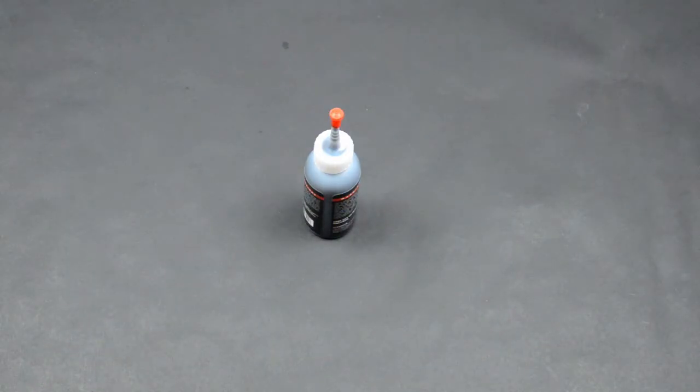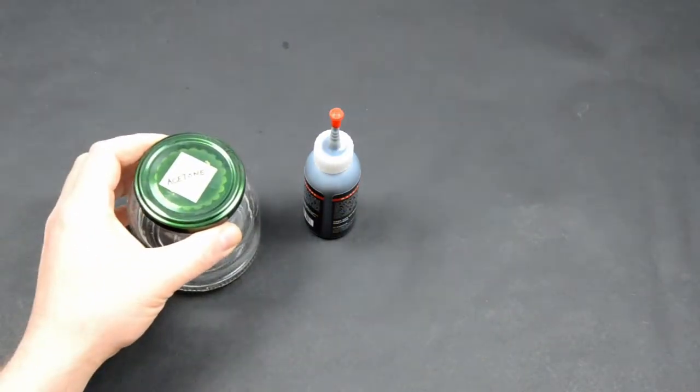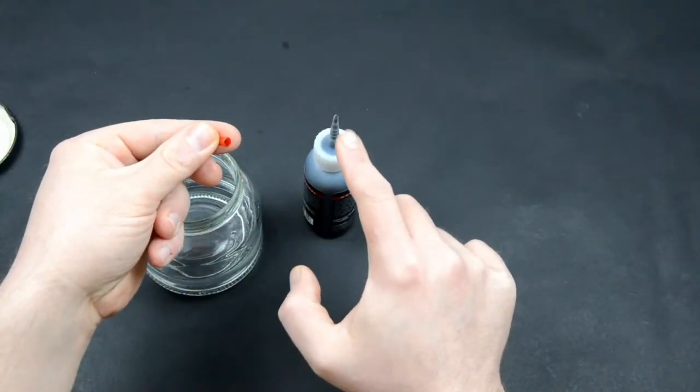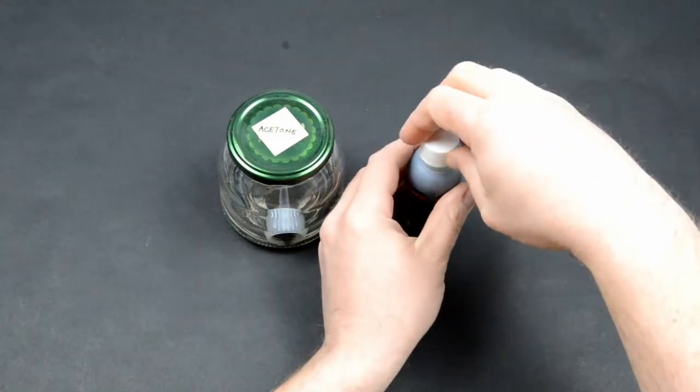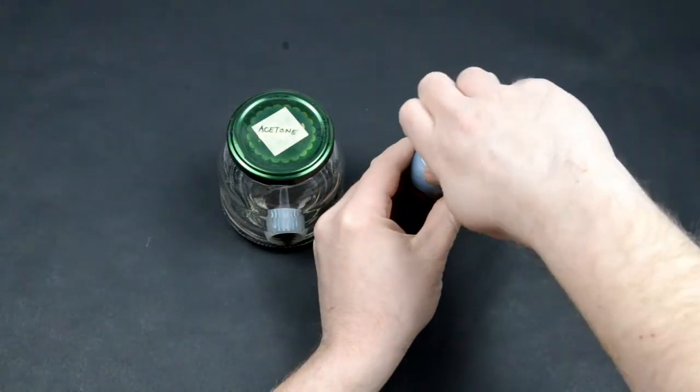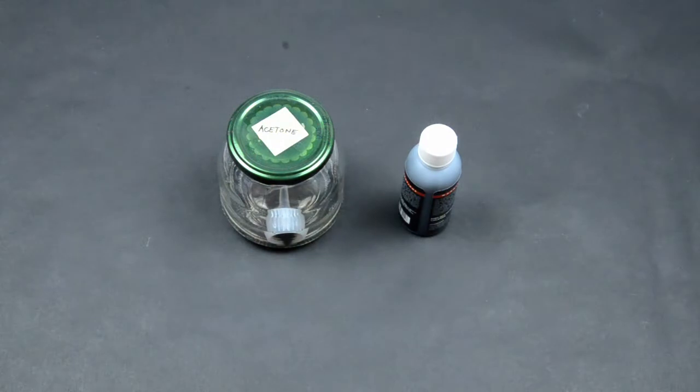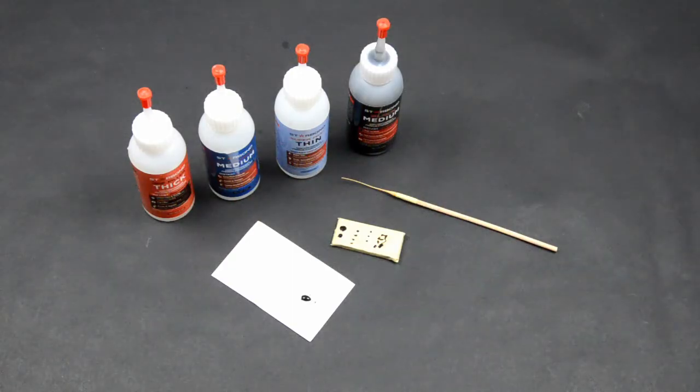You can also put your nozzles in acetone when you see that some dried glue is building up. Put everything in acetone, close the glue with the original cover. In a few hours, they will be like new. You can apply those rules for every CA glue out in the market.